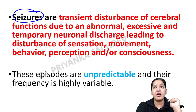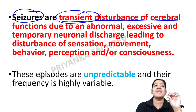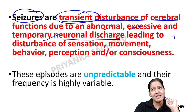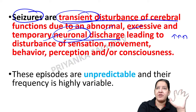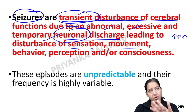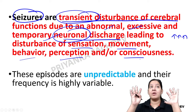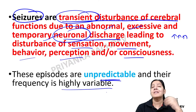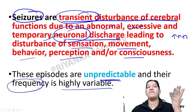Epilepsy or seizures are transient disturbances in brain function — transient, not permanent. At the time of the attack there is abnormal, excessive, temporary neuronal discharge. This discharge is excessive but temporary, leading to disturbance of sensation, movement, behavior, perception, and sometimes loss of consciousness. The episodes are unpredictable and frequency is highly variable — sometimes multiple episodes in one day, sometimes not even one in many years.